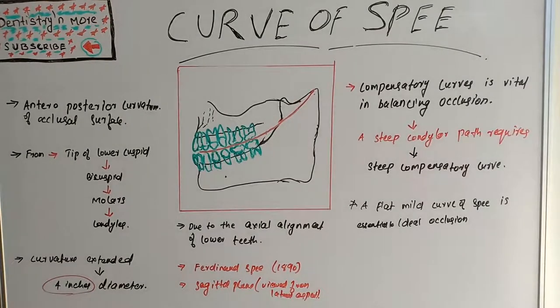This compensatory curve or curve of spee is important because anterior posterior and lateral curves are incorporated during artificial teeth arrangement during dental construction. These curves compensate for Christiansen's Phenomena.